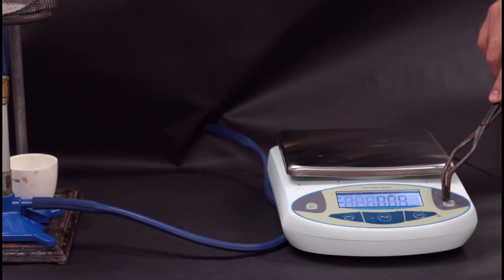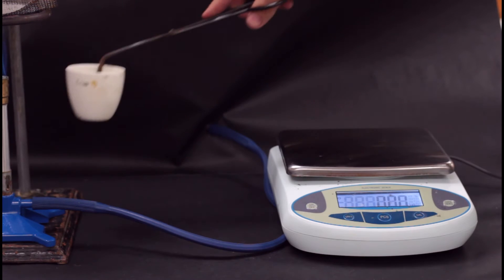Anytime we look at changes in the mass of a substance from a chemical reaction, we are doing a gravimetric analysis.